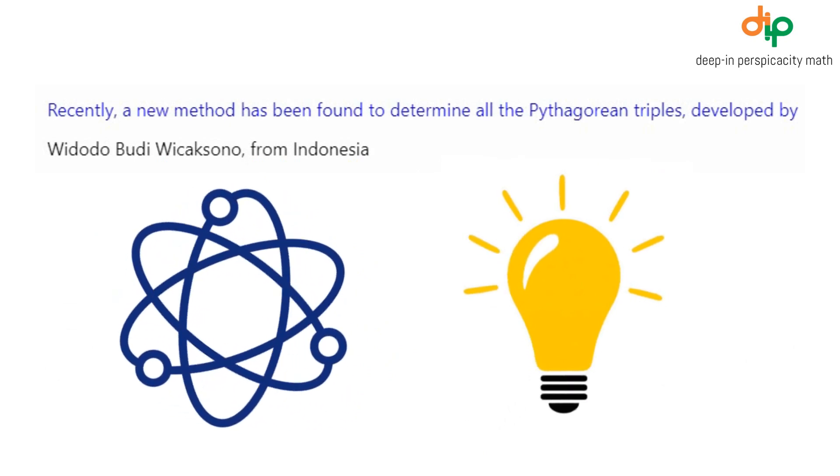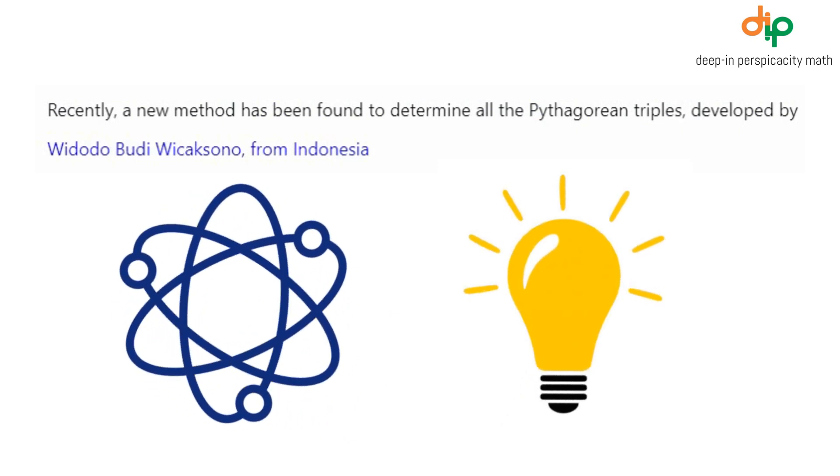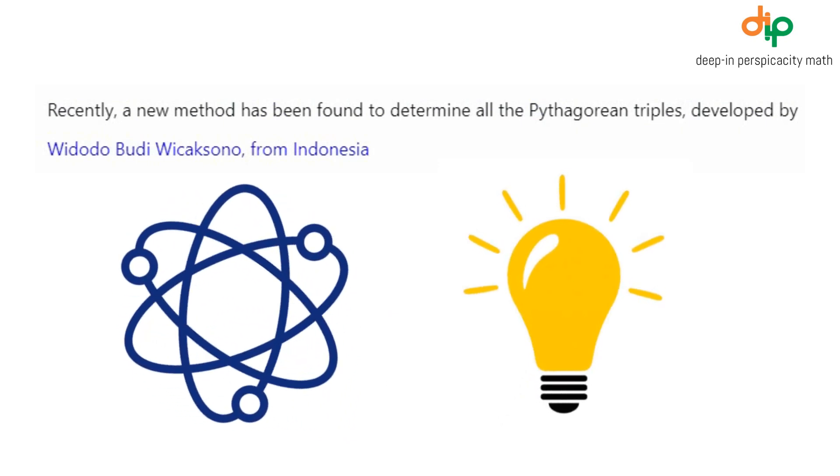Recently, a new method has been found to determine all the Pythagorean triples, developed by Widodo Budi Wichiksano from Indonesia.